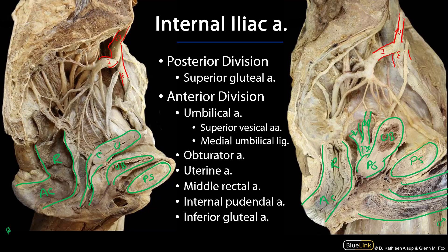The internal iliac has both posterior and anterior divisions. The posterior division includes the iliolumbar and lateral sacral arteries. Its terminal branch is the superior gluteal artery, which exits the pelvic cavity superior to the piriformis muscle — a relationship that is preserved at the hip, where the superior gluteal artery enters the hip superior to the piriformis.